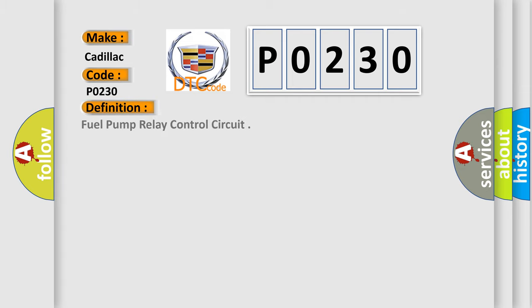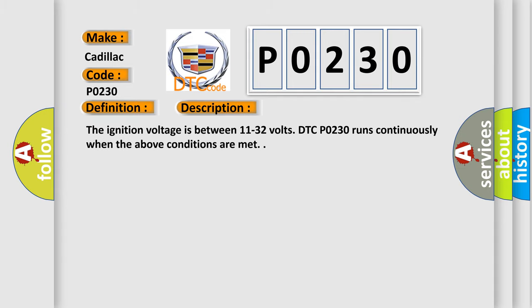The basic definition is Fuel Pump Relay Control Circuit. And now this is a short description of this DTC code.